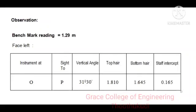Observation in face left condition: The benchmark is noted as 1.29 meters. The instrument is set at O and sight to P. Then vertical angle is noted as 31°30', and top and bottom hair readings are 1.810 and 1.645 respectively. Then the staff intercept is calculated as 0.165 meters.